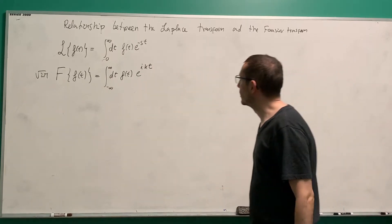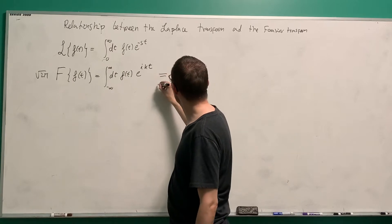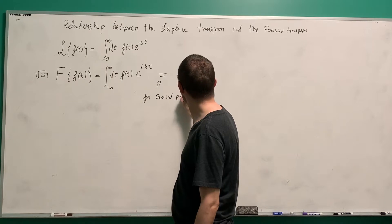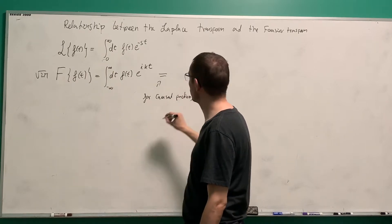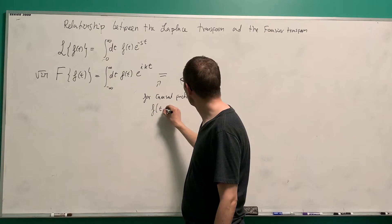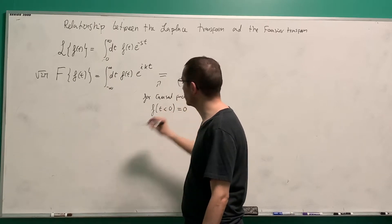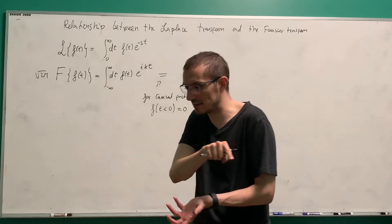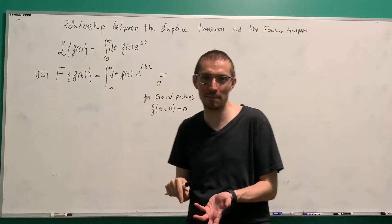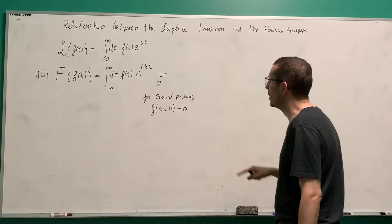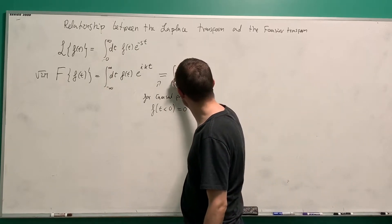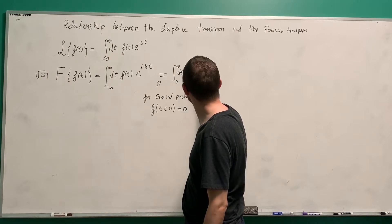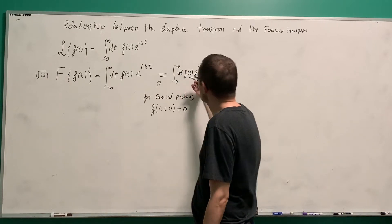At time equals zero, that ignores completely what happens for the negative time domain. And this one integrates over the whole time domain. The other difference is that there's an ik instead of a minus s in here. So first of all, if we restrict the Fourier transform to causal functions, remember what causal functions are? Functions that are exactly zero for negative t.